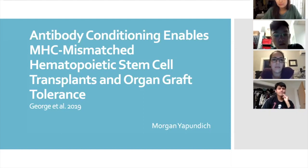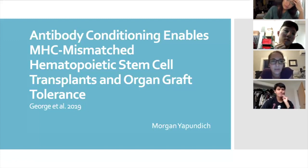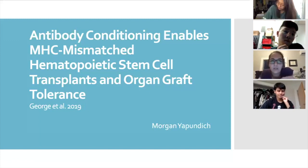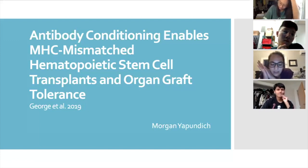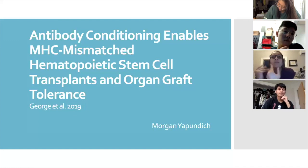Sickle cell disease is a genetic disease that causes a mutation in your beta globin gene, causing your blood cells to make sickle beta globin instead of normal beta globin. Because of that, your red blood cells make a sickle shape instead of a normal biconcave disc, and that causes a lot of issues. One of the only treatments we currently have is to do a hematopoietic stem cell transplant.